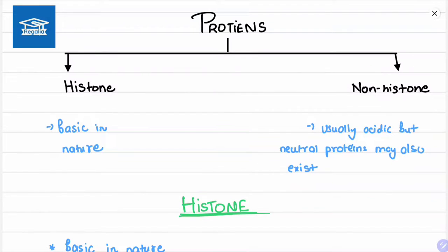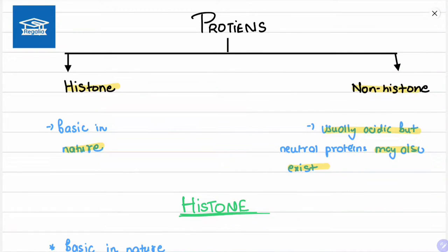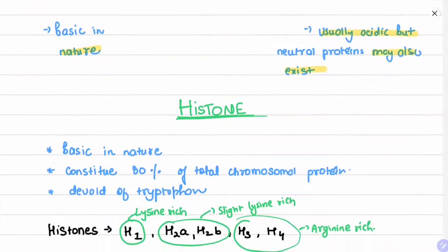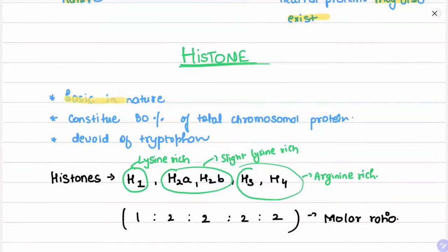Proteins in chromatin are of two types: histone and non-histone proteins. Histone proteins are basic in nature. Non-histone proteins are usually acidic, but neutral proteins may also exist — so saying non-histone is purely acidic is false.